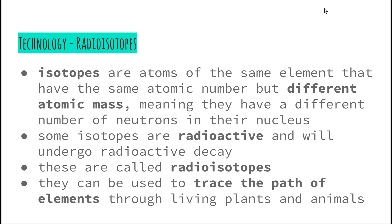Some of these isotopes are radioactive and will undergo what we call radioactive decay. Each element has a particular half-life, and during that half-life, half of the original amount of that radioactive substance remains. We can use those half-lives to tell us information about different things. A radioactive isotope is shortened to a radioisotope, which takes us exactly back to our syllabus dot point.